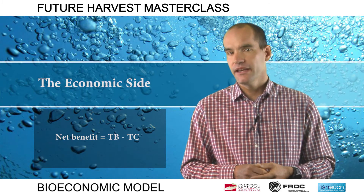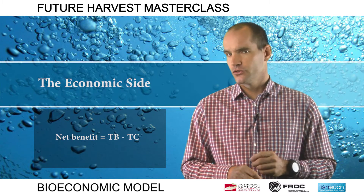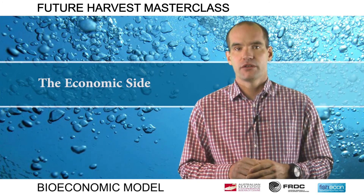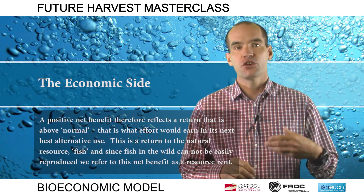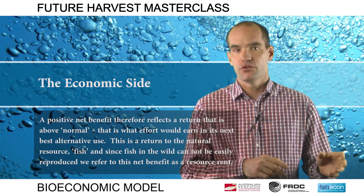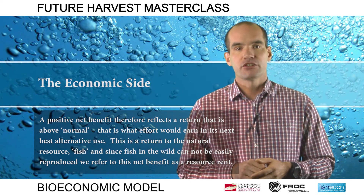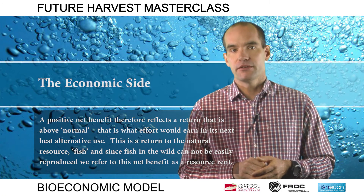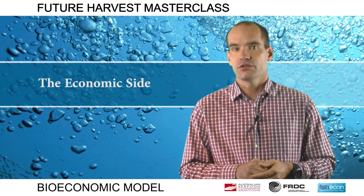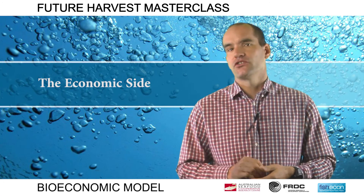It is worth taking a moment to remind ourselves what this net benefit represents in economics. Remember from Module 1 that in economics, total cost includes all opportunity costs. A positive net benefit therefore reflects a return that is above normal — that is, what effort would earn in the next best alternative use. This is a return to the natural resource, or fish, and since fish in the wild cannot easily be reproduced, we refer to this net benefit as a resource rent. It is clear that if you were the sole owner of this fishery, you would want to choose the level of effort, and hence harvest and stock, that maximised the size of this rent.